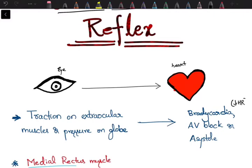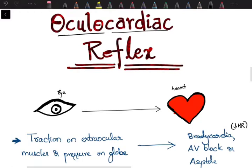This leads to changes at the heart: decrease in heart rate, sometimes AV block, and asystole may occur. This is oculocardiac reflex - traction or pull on extraocular muscles or pressure over the globe leading to bradycardia, AV block, or asystole.